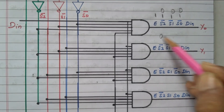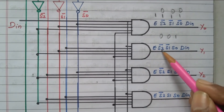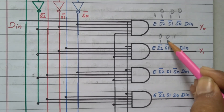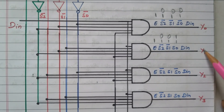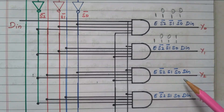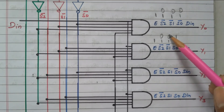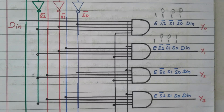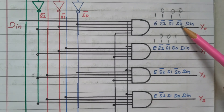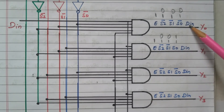For the second combination 0,0,1: the first two zeros are complemented so they become 1,1; the third input S0=1 is connected as-is. Enable is already 1, so all inputs are 1 and D_in is available at Y1. For the remaining AND gates: for example, where S1 is directly connected and S1=0, the output becomes 0. Also where S0_bar is used but S0=1 means S0_bar=0, making those gates output 0. So only Y1 produces the output.